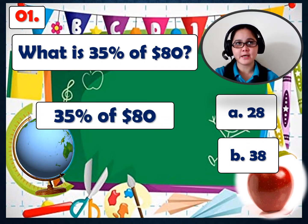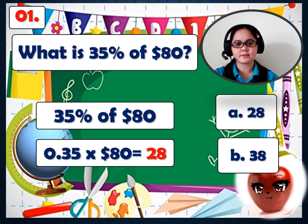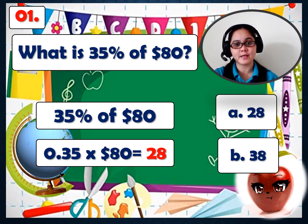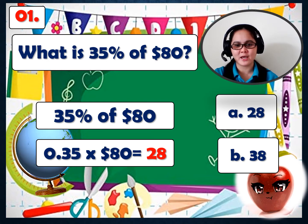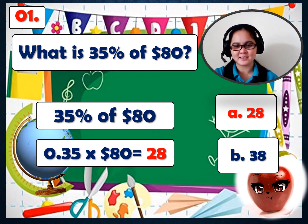35% of $80. First, change 'of' into times, and change the percent into decimal form. We will use decimal form. Let's multiply: 0.35 times $80 equals $28. So the correct answer is letter A.